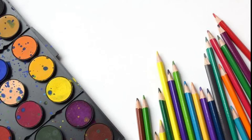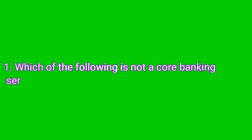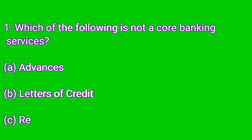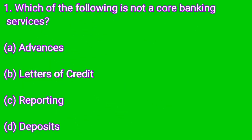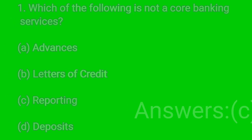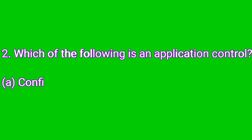Let's begin. Question number one: which of the following is not a core banking service? Option A: Advances. Option B: Letters of Credit. Option C: Reporting. Option D: Deposits. The answer is C — Reporting. Reporting is not a core banking service, so the right answer is C: Reporting.